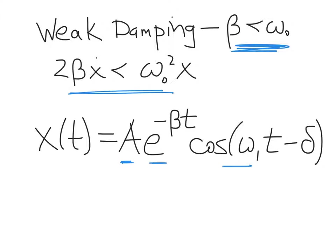A few things to note compared to the undamped harmonic oscillator: there's no exponential damping term e^(−βt) in the undamped case. Also, the frequency of oscillation for the weakly damped oscillator, ω₁, is less than the natural frequency ω₀, because the damping modifies the oscillatory frequency.